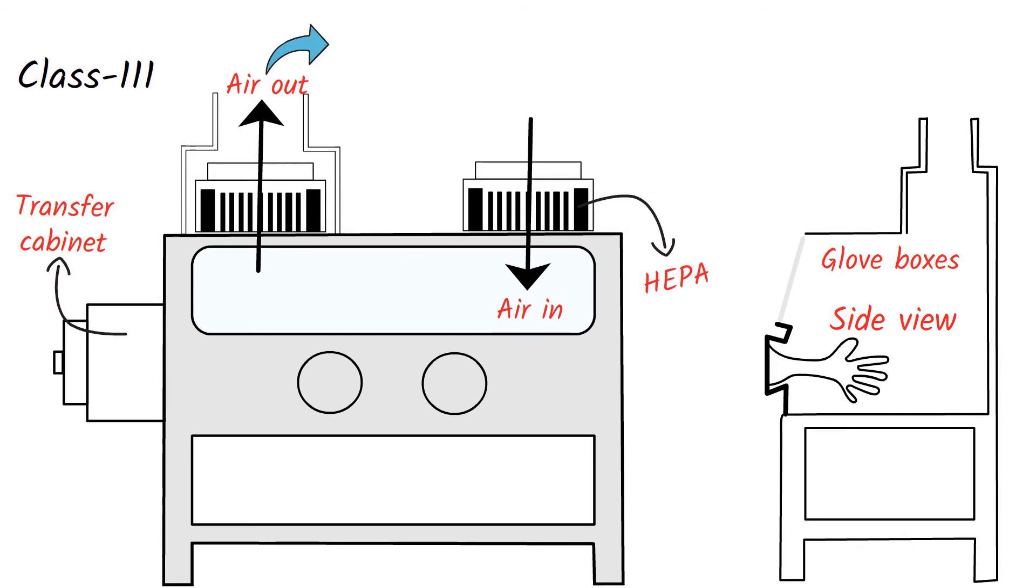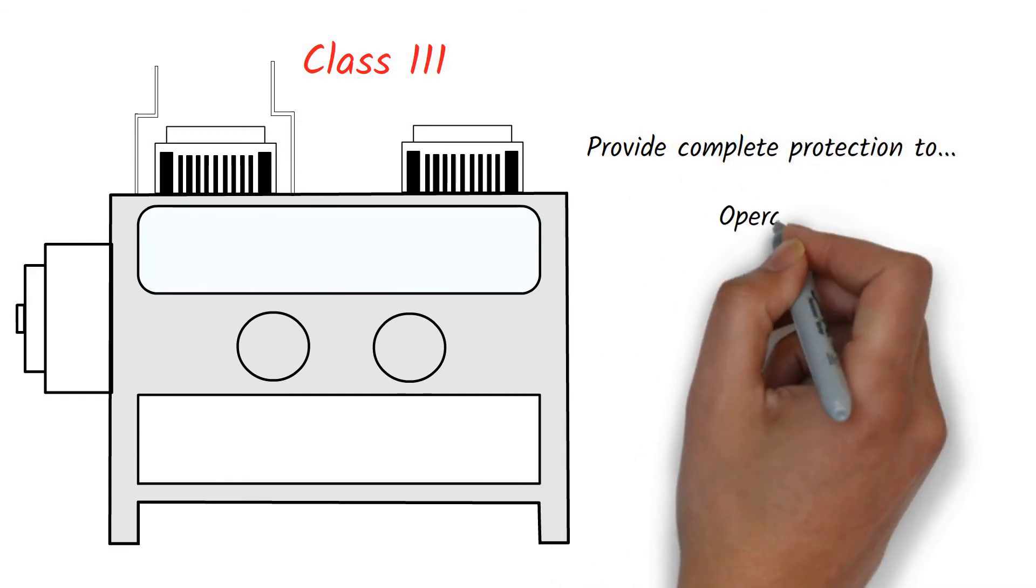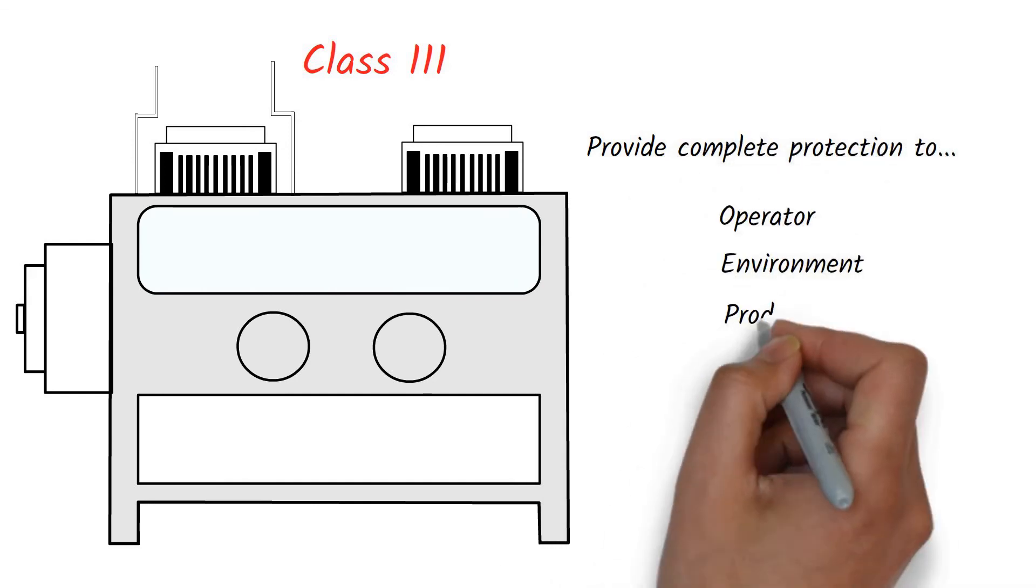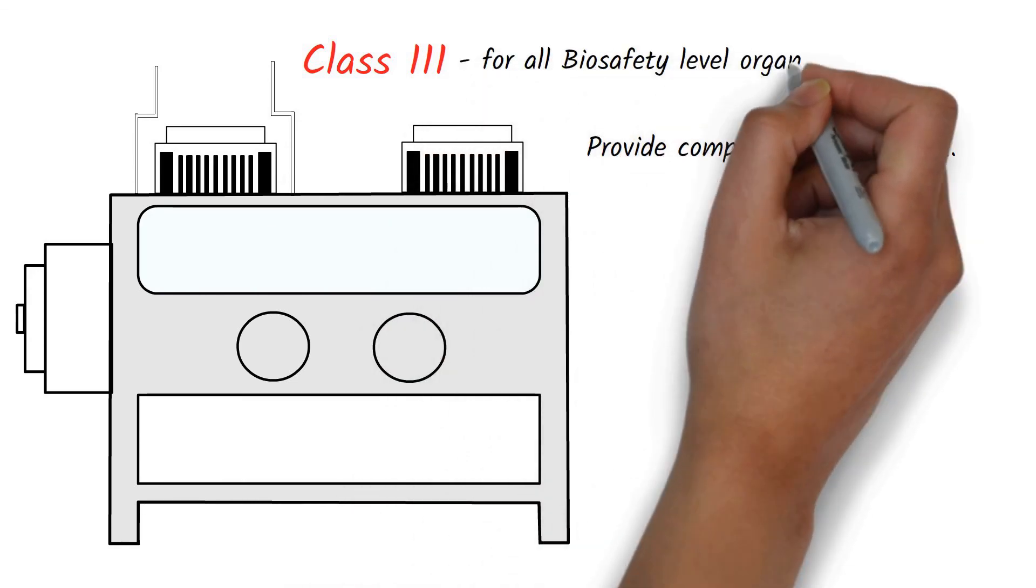The exhaust air is either treated with double HEPA filters or single HEPA filter followed by incineration. The Class 3 biosafety cabinets provide complete protection to the operator, environment, and the product. Hence, the Class 3 is suitable for all biosafety level organisms.